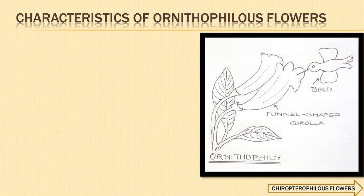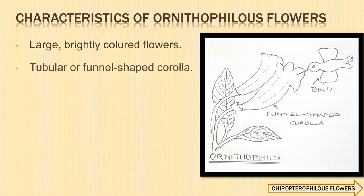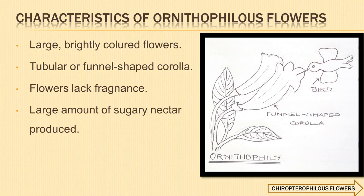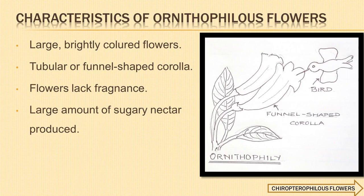When pollination takes place through birds, it is called ornithophily, and such plants are called ornithophilous. The characteristics of these flowers are: large, brightly colored flowers with thick and fleshy floral parts; corolla is tubular or funnel-shaped so that the beak can enter for nectar without hindrance; flowers lack fragrance because birds have poor sense of smell; flowers produce a large amount of sugary nectar; and pollen grains are sticky, as in Bignonia and Bombax (silk cotton). The common pollinating birds are sunbirds, hummingbirds, and woo-woo, etc.